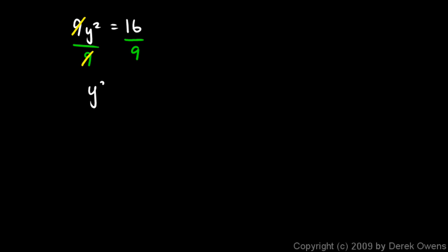That leaves us with y squared equals 16 over 9, and then we can take the square root of each side. You don't even have to write these radical signs, you can just recognize that square rooting the left side will give you y and square rooting the right side will give you the square root of each of those.